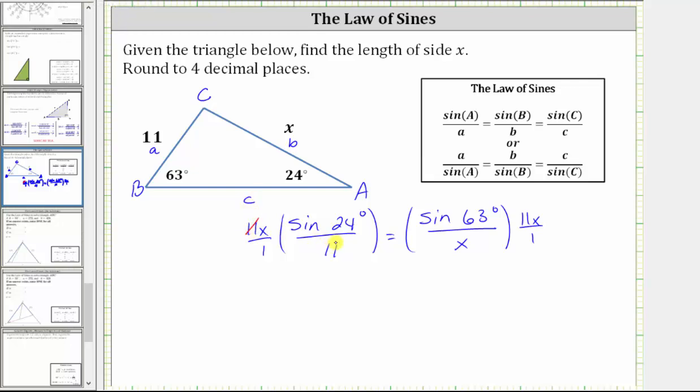...leaving us with x sine 24 degrees equals, on the right, x divided by x simplifies to one, giving us 11 sine 63 degrees.